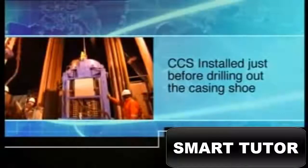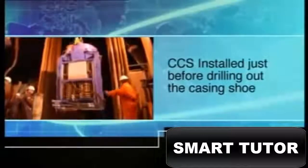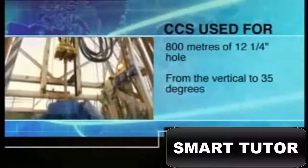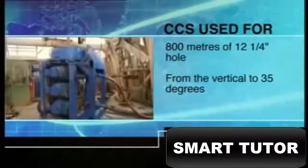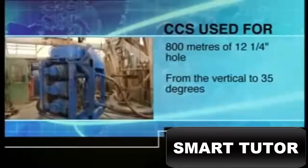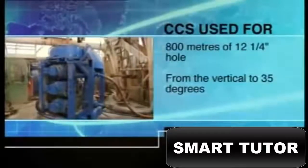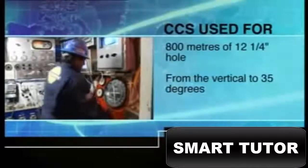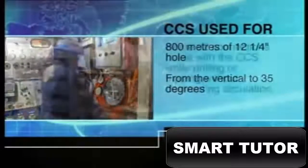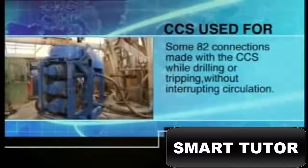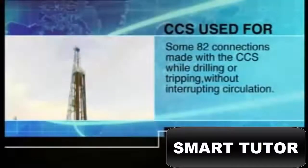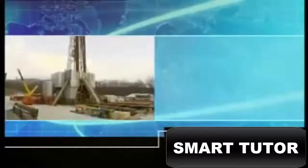The CCS was installed just before drilling out the casing shoe. Over 800 meters of 12 and a quarter inch hole were drilled with the CCS, building angle from vertical to an inclination of 35 degrees and continuing in the tangent section. Some 82 connections were made with the CCS while drilling or tripping without interrupting circulation. Having seen the principles behind the CCS and the advantages it brings, let's look at the system in action at Mont Enoch.